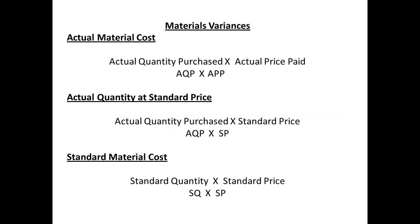The actual cost of materials will be the actual quantity purchased multiplied by the actual price paid. To compare this, we need to look at the actual quantity at a standard price, which would be the actual quantity purchased multiplied by the standard price. We can also compare with the standard costs, which would be the standard quantity of material used multiplied by the standard price. These are the calculations that we use for materials variances.